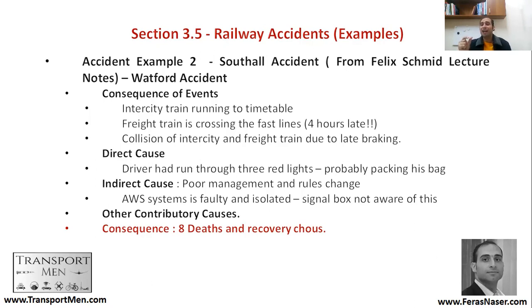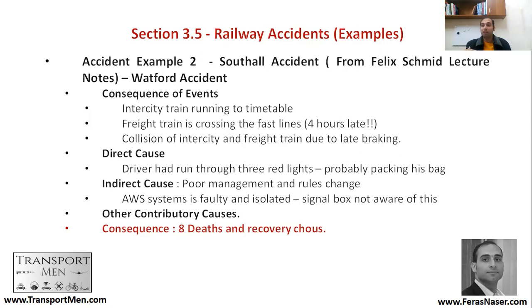The direct cause is that the driver had run through three red signals — as shown by the track circuits — probably distracted by something. With a late train in front of you, you don't have much time or space to maneuver. The indirect cause is poor management and a rules change: how did a freight train end up four hours late on the fast track? Also, one of the direct causes is that the automated warning system, the AWS system, was faulty and isolated, so it did not give the driver enough warning.